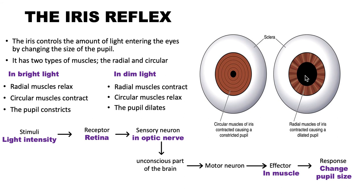On the other side, you can see the radial muscles are contracted — this is when there is dim light. The radial muscles are going to contract, so the circular muscles have to relax, so that the size of the pupil is increased in order to enable the light to go into the eye.